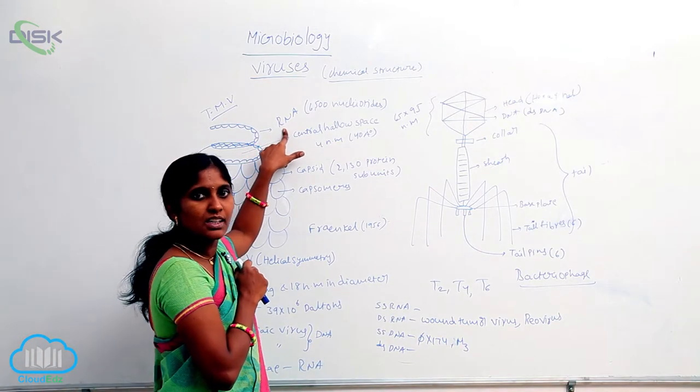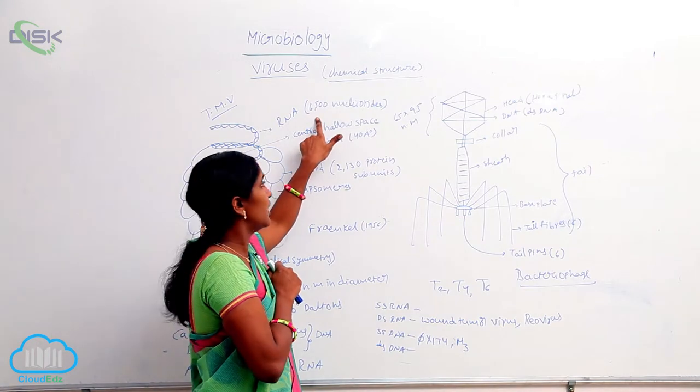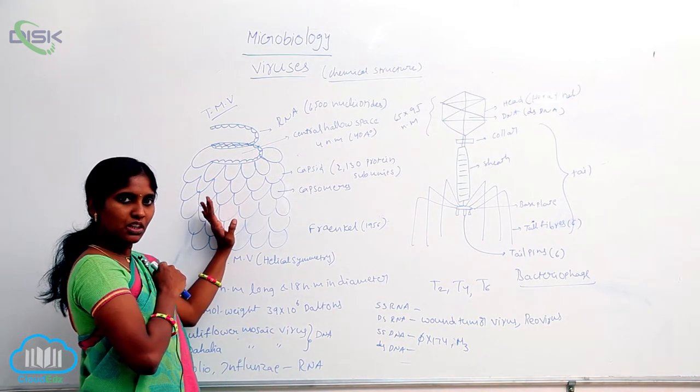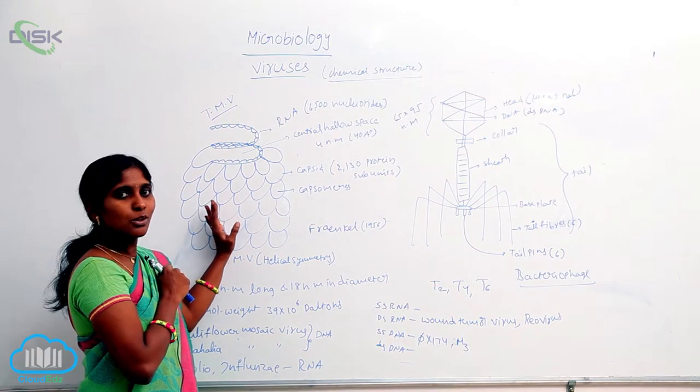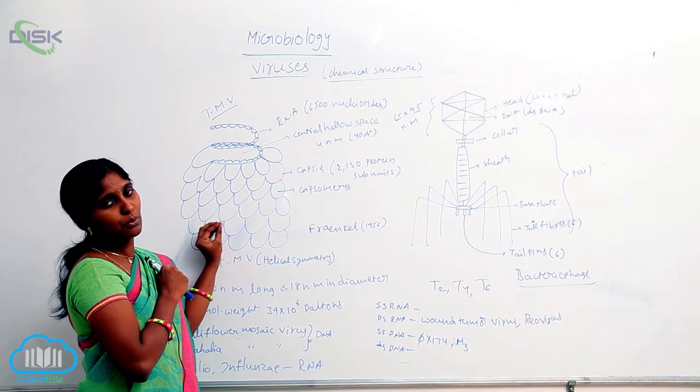You see here, RNA is single stranded RNA. It is composed of 6500 nucleotides. What you are seeing in the structure, that is protein coat. So, that is also called capsid. It has some protein subunits.